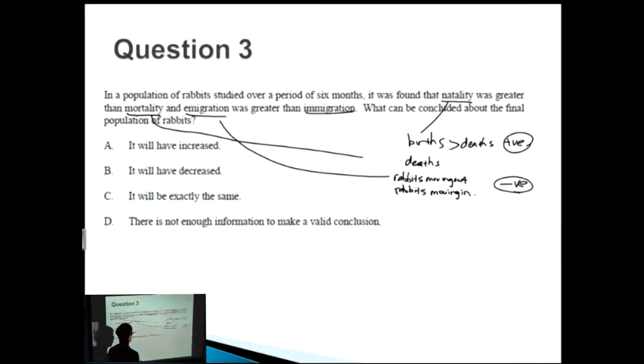But we don't know how big the positive is, and we don't know how big the negative is. So because of that, you have to be very critical about this question. The answer is D. There's not enough information to make a valid conclusion, because some people might be tempted to say C, or it will be exactly the same, because we have a positive and a negative.